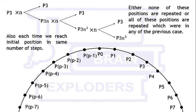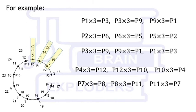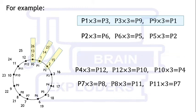Each time we reach the initial position in the same number of steps. In the example on the screen, each time we reach the initial position in three steps. Blue boxes are showing two all-repeated cases, and the rest are none-repeated cases.